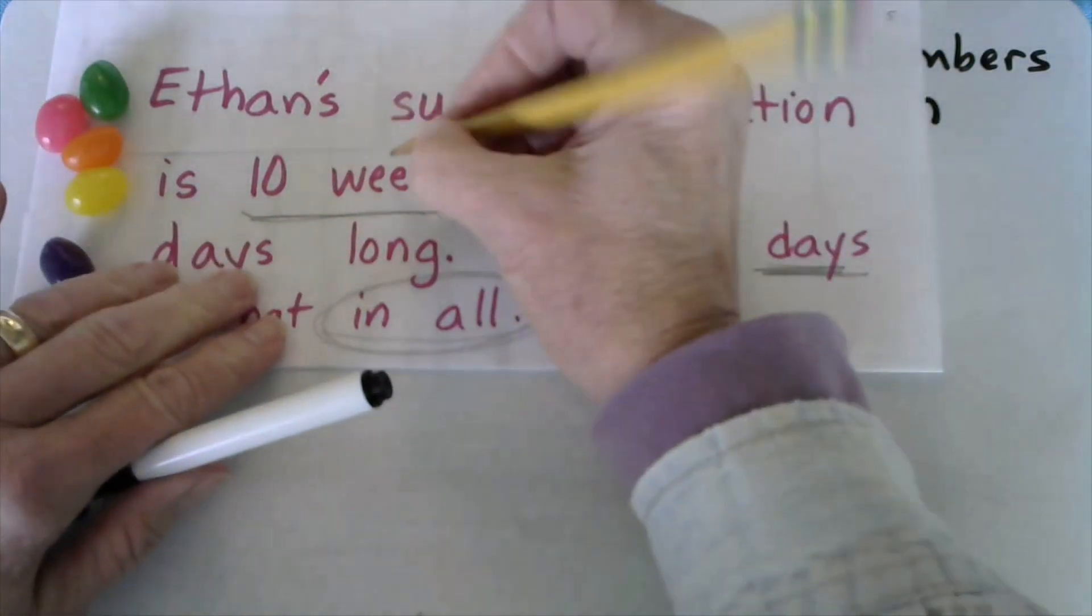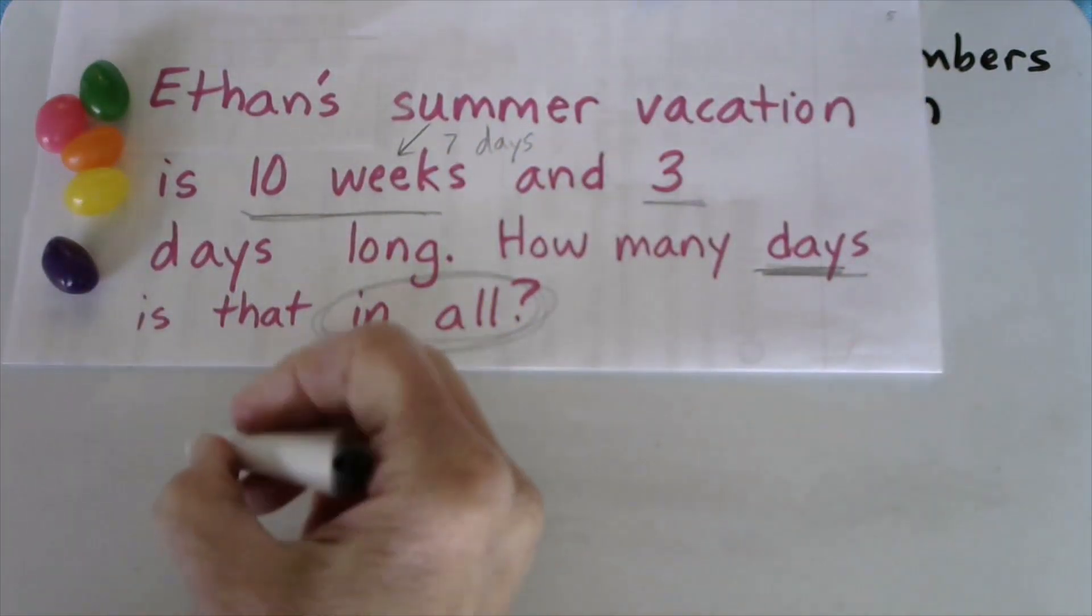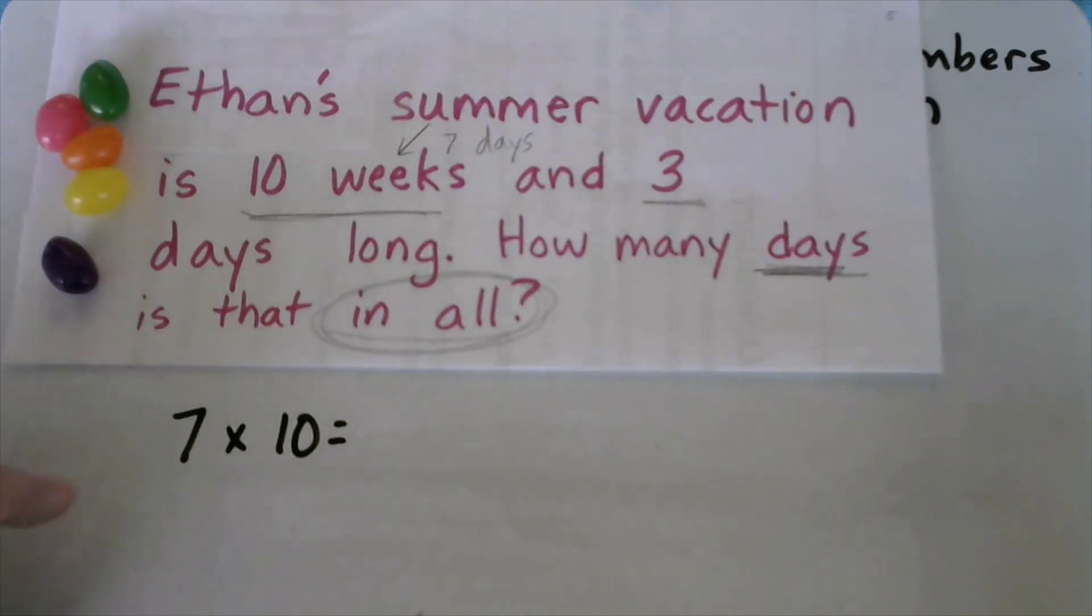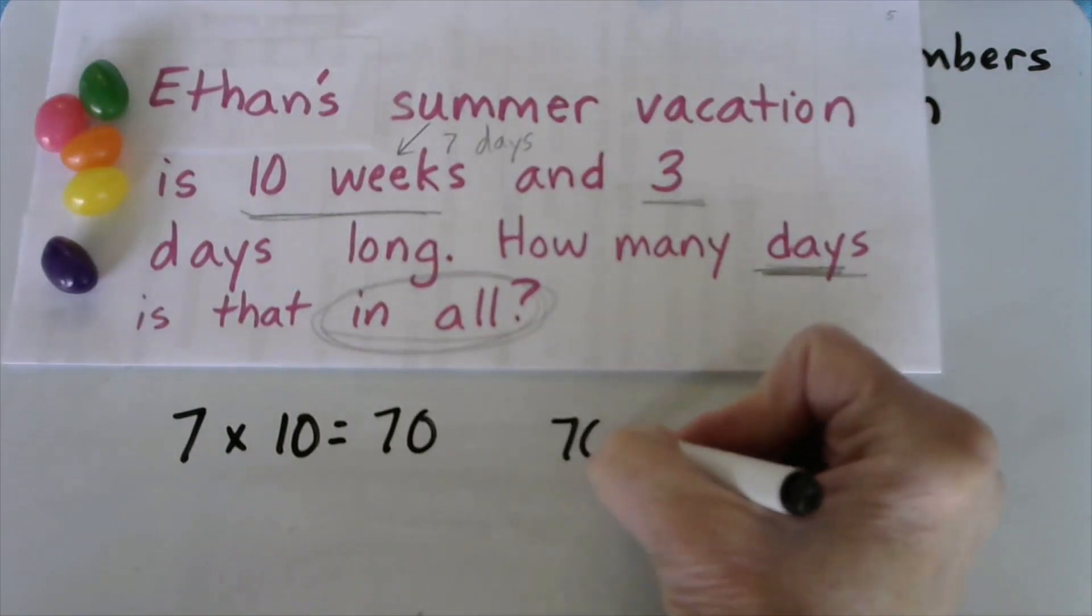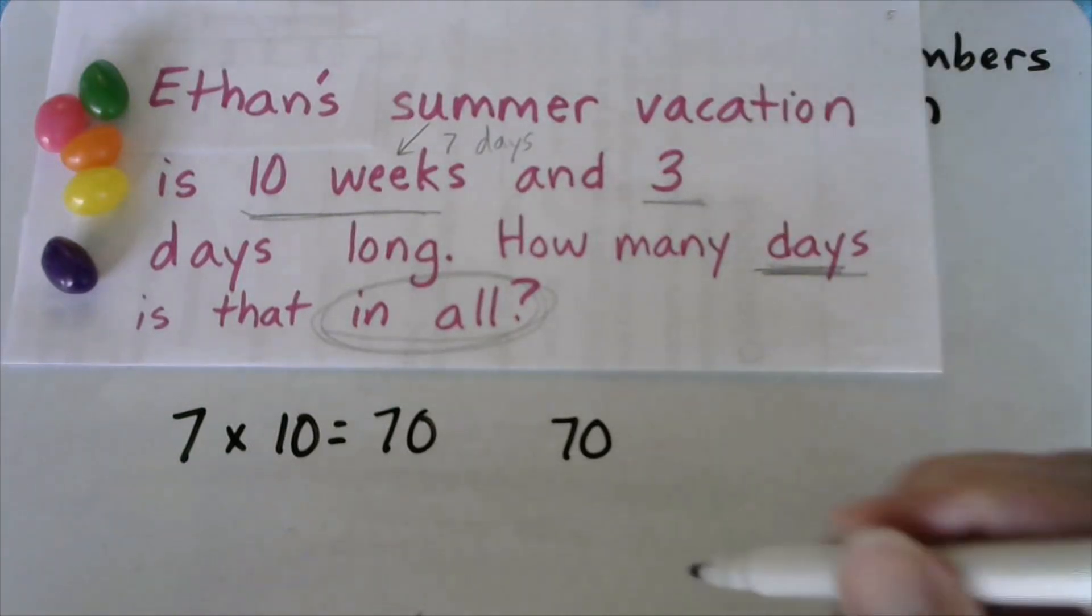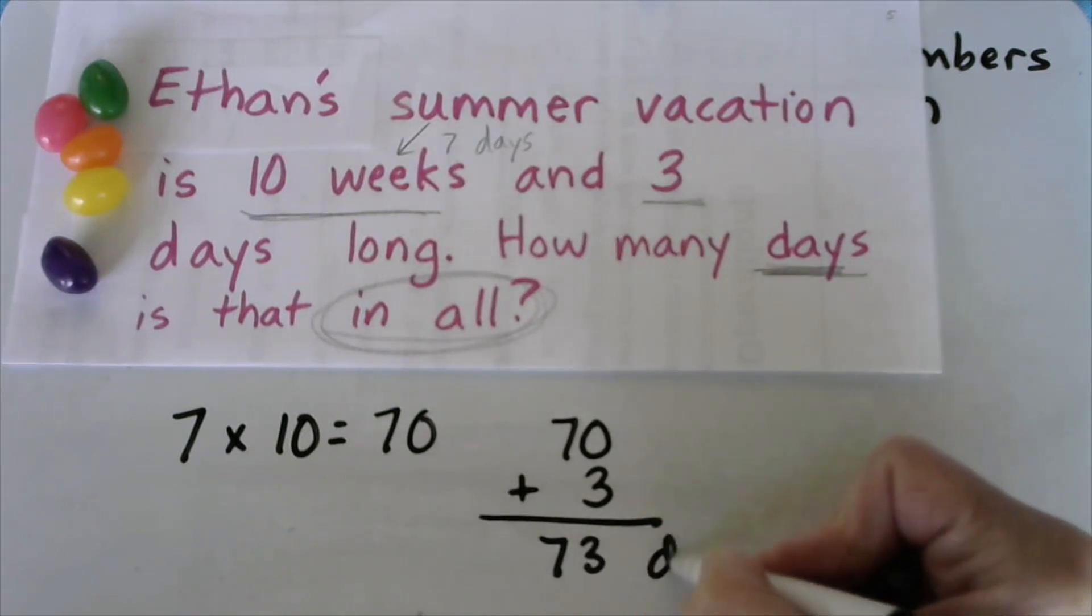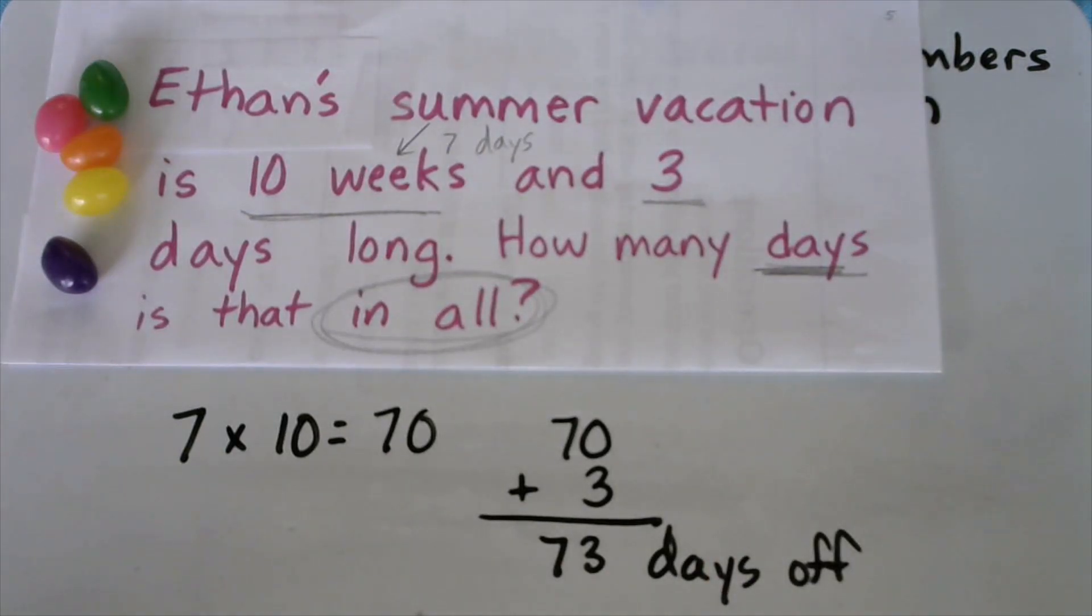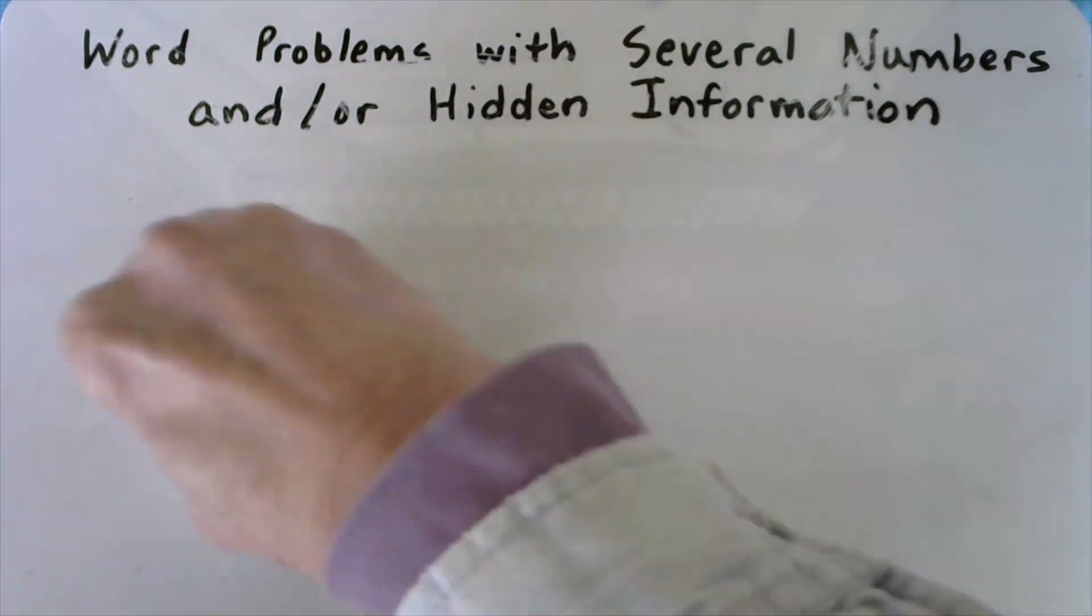Yes, the hidden number was in the word weeks. We know in a week there are 7 days. So if we have 7 days in a week and we have 10 weeks, we could count by sevens 10 times, but we know 7 times 10 is going to be 70. So he's got 70 days off that's hiding inside of the 10 weeks. He has 3 days in addition to that. So he has 73 days off and thumbs up if you remember to write the unit. Good job.